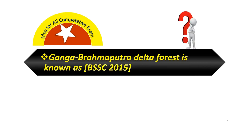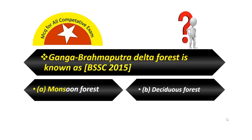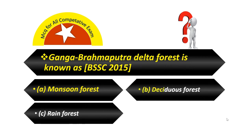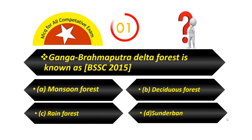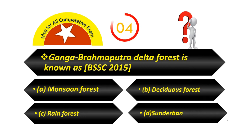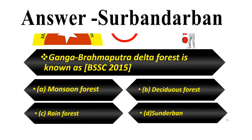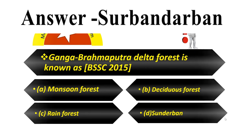Ganga-Brahmaputra Delta Forest is known as: Option A — Monsoon Forest. Option B — Deciduous Forest. Option C — Rain Forest. Option D — Sundarban. Answer is Sundarban.